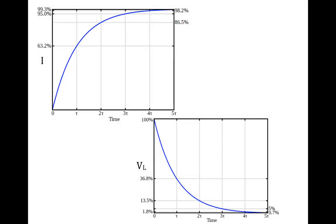You can see this in the graphs. This graph shows current with respect to time — the x-axis is time in time constants and the y-axis is current as a percentage of the eventual maximum. Over time, the current starts at zero and increases, approaching 100%. This same graph also applies to the voltage across the resistor since they're directly proportional through Ohm's law. The graph for voltage across the inductor shows the opposite: it starts at its maximum and decreases toward zero over time.